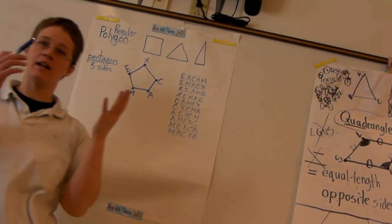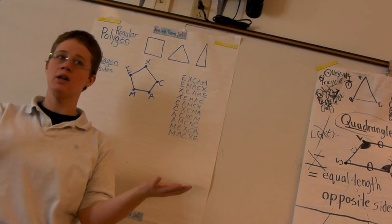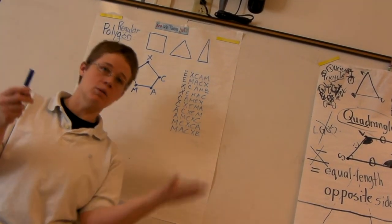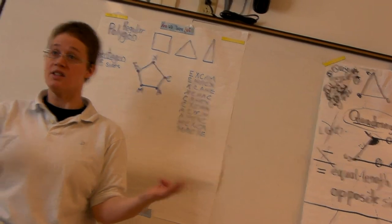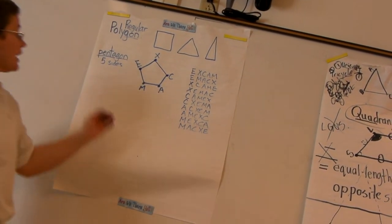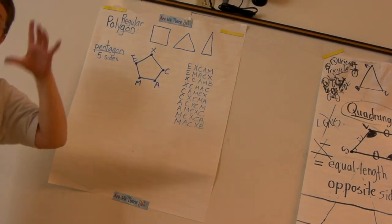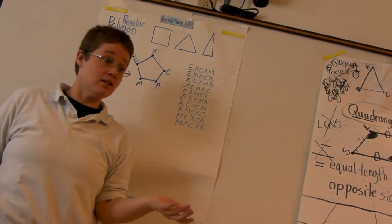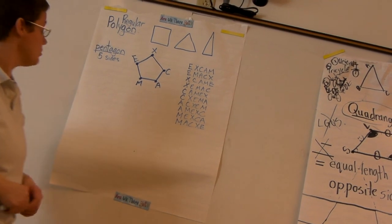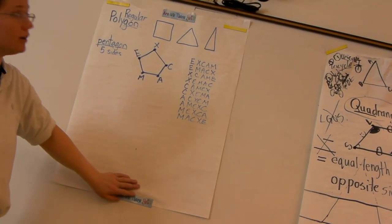And so you guys notice that pattern, right? The triangle had three points, six names. The quadrangle had four points, eight names. It doubles. And that will work with other polygons, regular or irregular. It will work. So that's good to know in case you want to figure out the names of polygons.